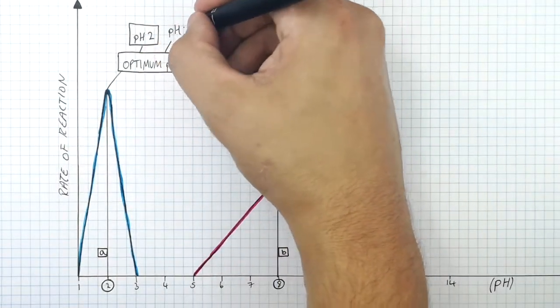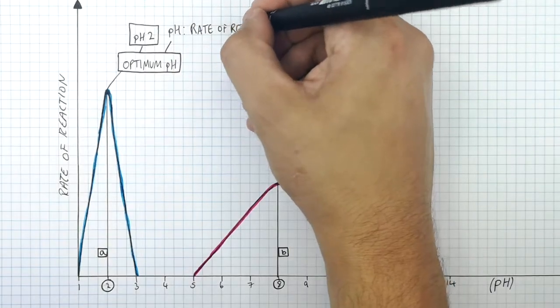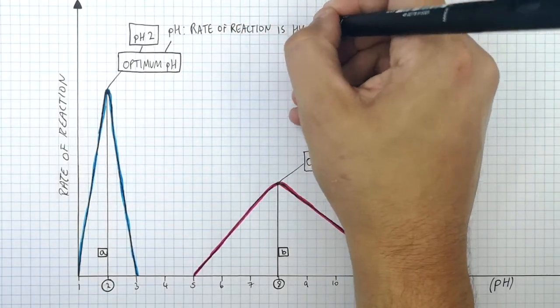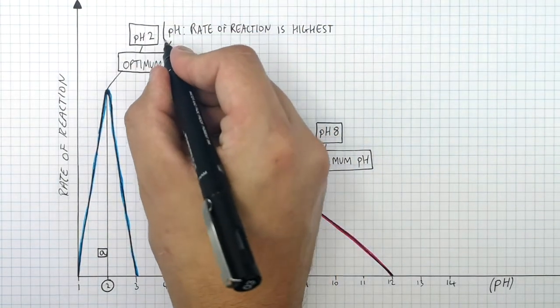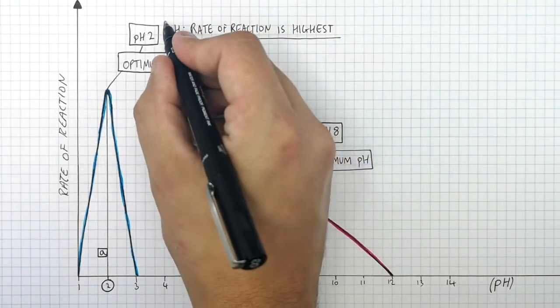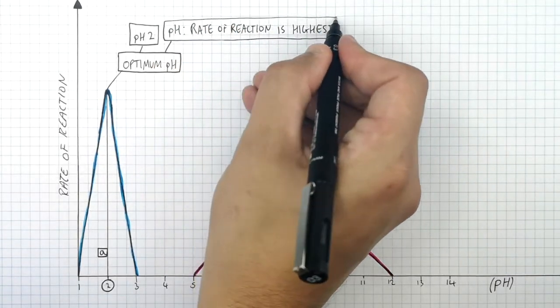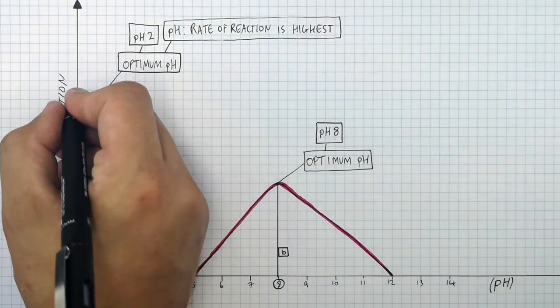The optimum pH is the pH where the rate of reaction is at its highest.